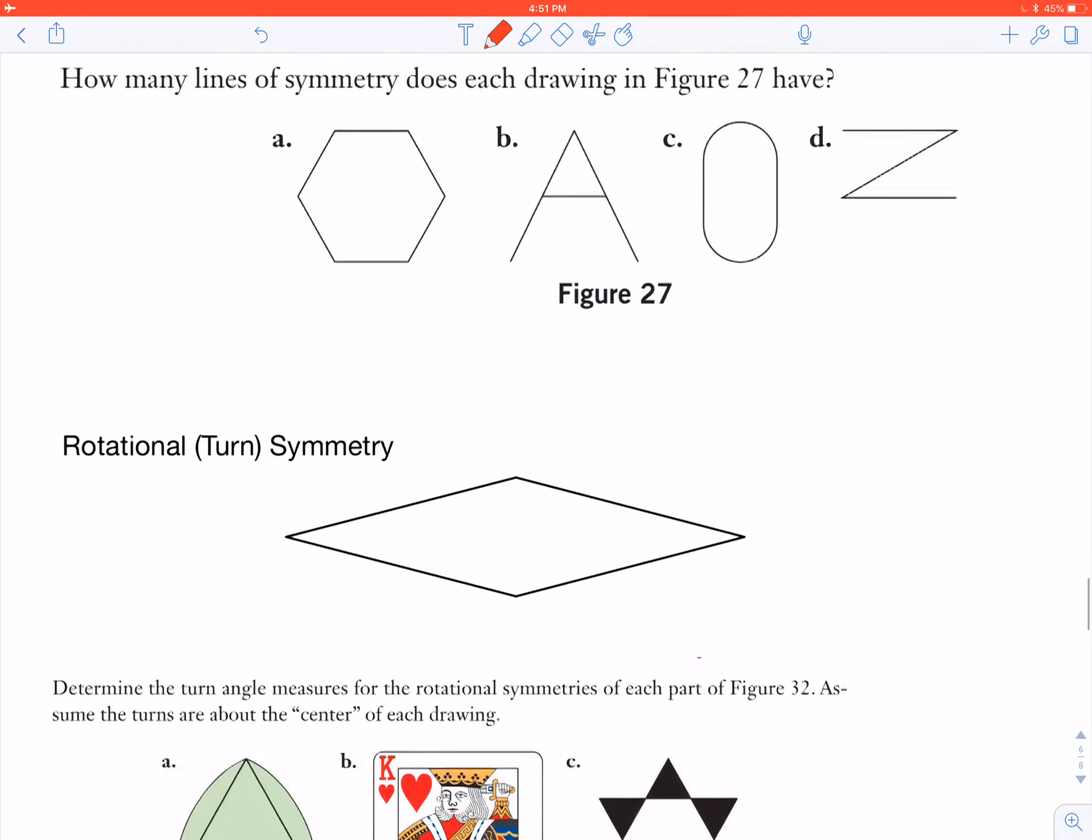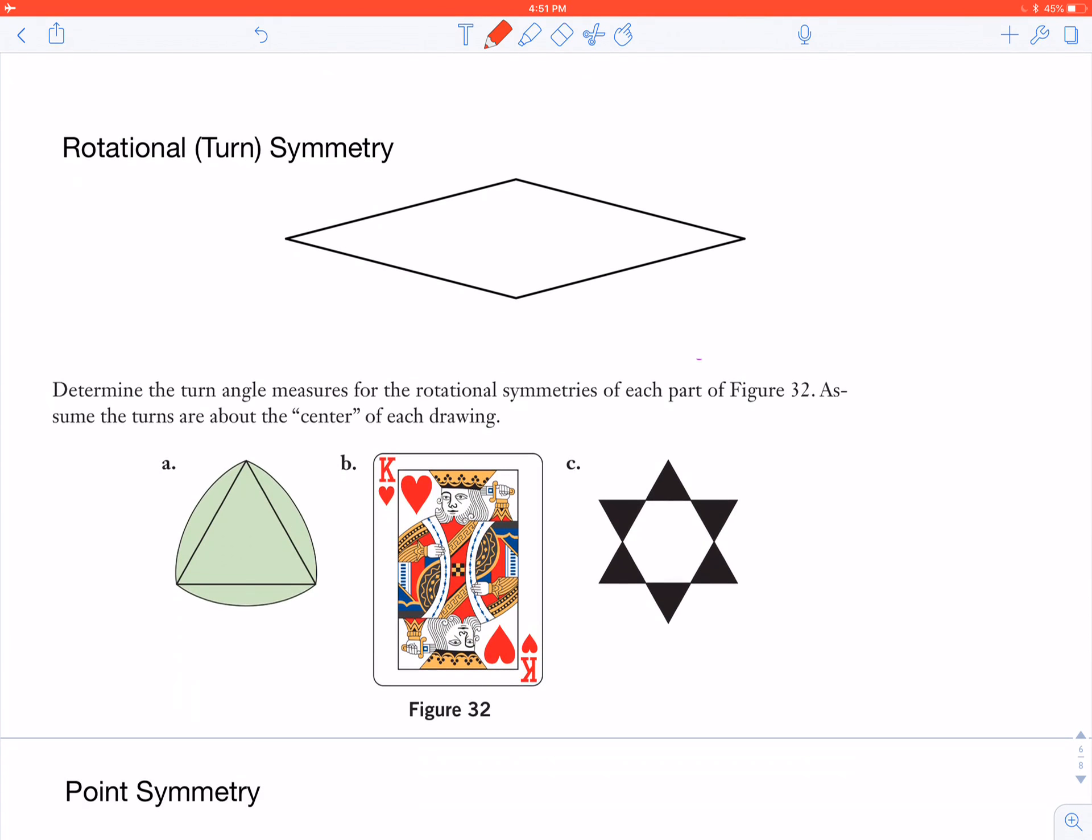If you go down a bit, we have rotational or turn symmetry. I will use both of those terminologies. A figure is going to have rotational symmetry when a copy of the figure can be turned between 0 degrees and 360 degrees and the copy matches the original figure.